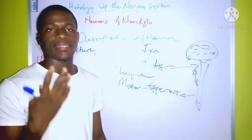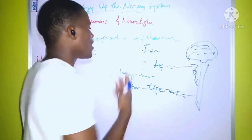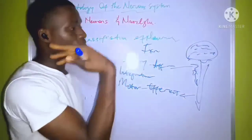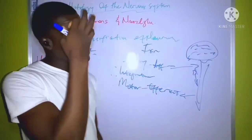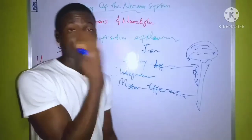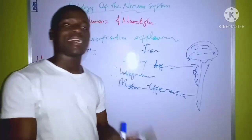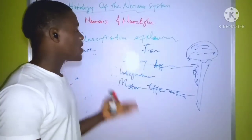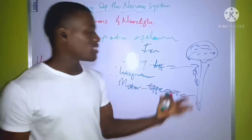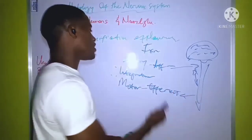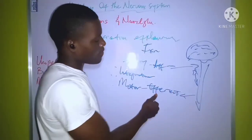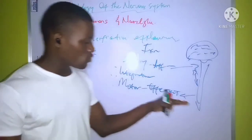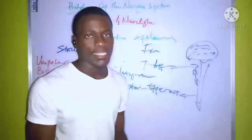The sensory organs include the nose, the eyes, and so on. The impulse is sent to the central nervous system where it is integrated and processed by the brain and spinal cord, and then sent back via the efferent neuron. The efferent neurons are found mainly within muscles and glands, which are responsible for our actions.